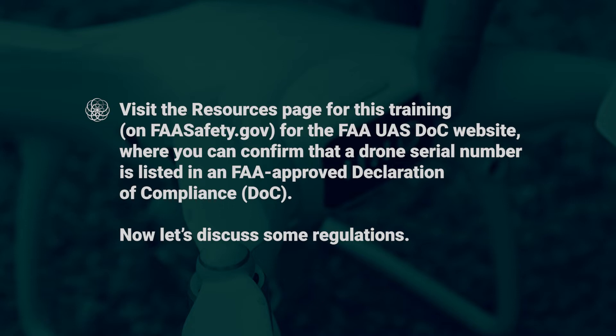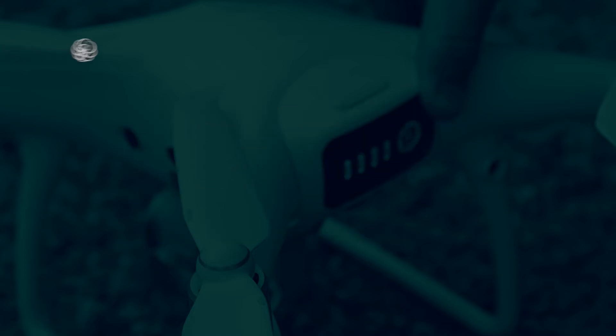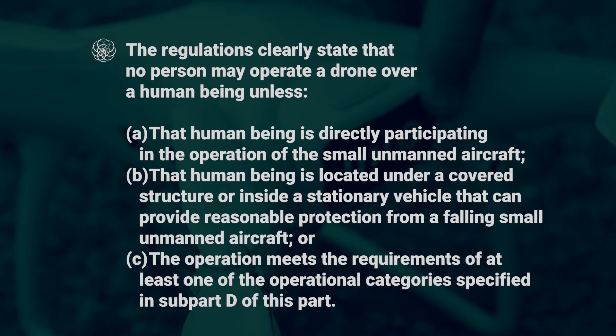Now, let's discuss some regulations. The regulations clearly state that no person may operate a small unmanned aircraft over a human being unless: a) that human being is directly participating in the operation of the small unmanned aircraft; b) that human being is located under a covered structure or inside a stationary vehicle that can provide reasonable protection from a falling small unmanned aircraft; or c) the operation meets the requirements of at least one of the operational categories specified in Subpart D of this part.